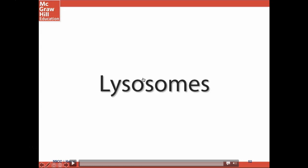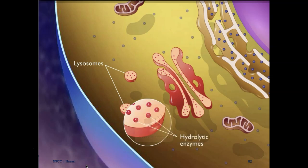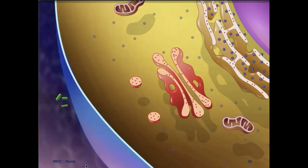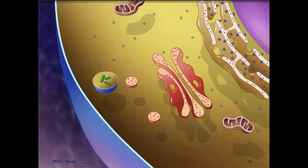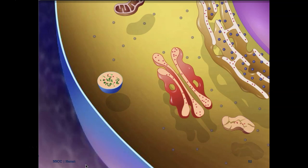Lysosomes are membrane-bound vesicles that contain hydrolytic enzymes. These enzymes degrade proteins, nucleic acids, lipids, and carbohydrates. Lysosomes are formed by the Golgi apparatus. When particles such as viruses or bacteria are ingested by phagocytosis, the lysosome fuses with the particle-containing vesicle called a phagosome and delivers the hydrolytic enzymes. Lysosomes also fuse with old mitochondria, resulting in the destruction and recycling of these structures.